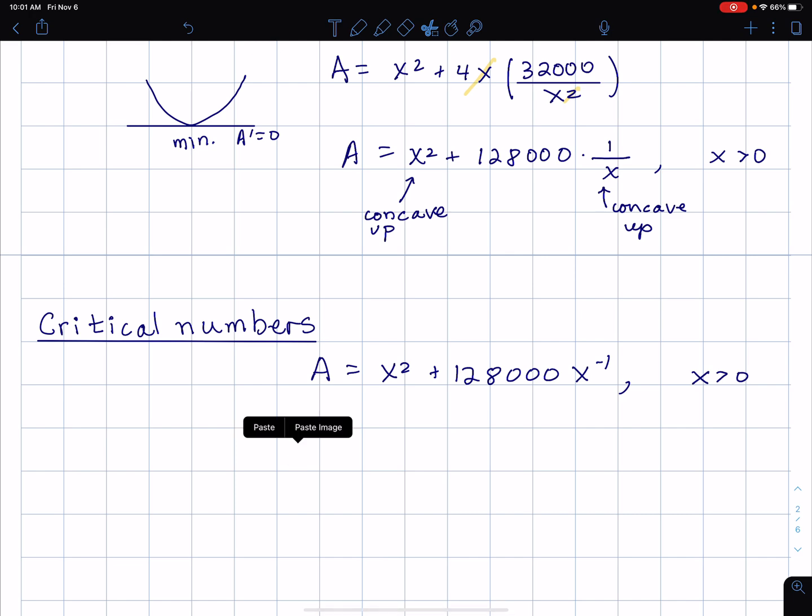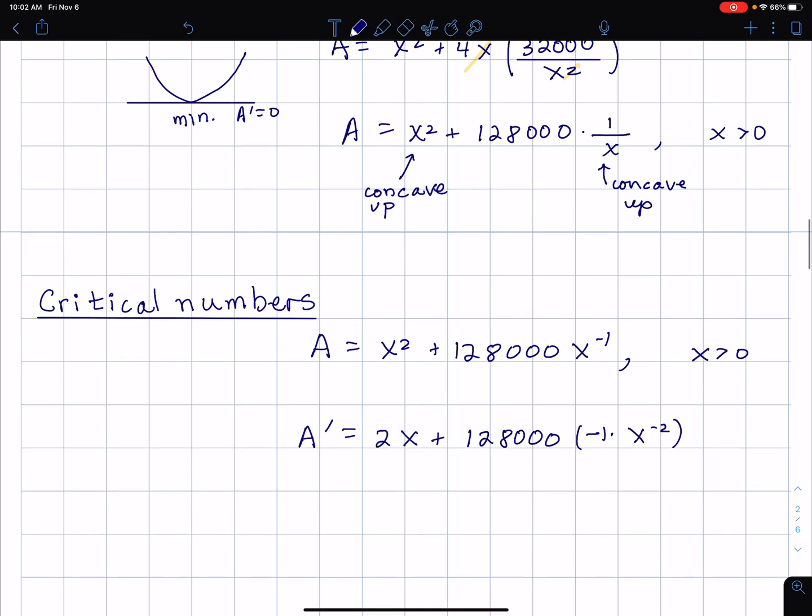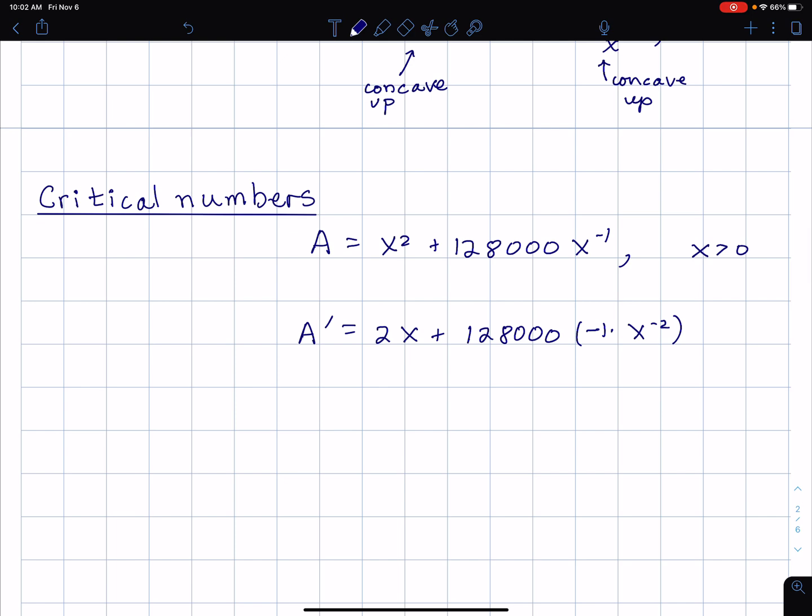I'll just go ahead and pretty straightforward use the power rule here. Notice I wrote x to the minus one power so it's easier to use the power rule. The derivative of x squared is 2x. Then I leave the constant alone. The derivative of x to the minus one is negative one times x to the minus two. Straight up using the power rule there. So then I solve A prime equals zero. So I'll have 2x minus 128,000 divided by x squared equals zero.